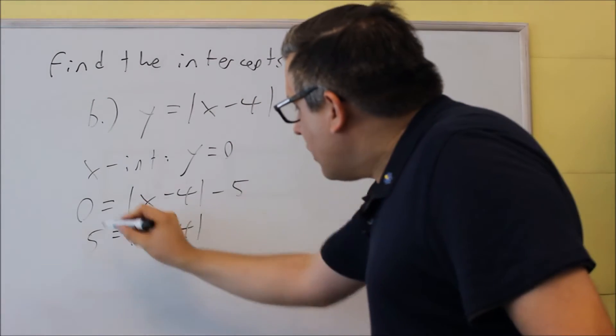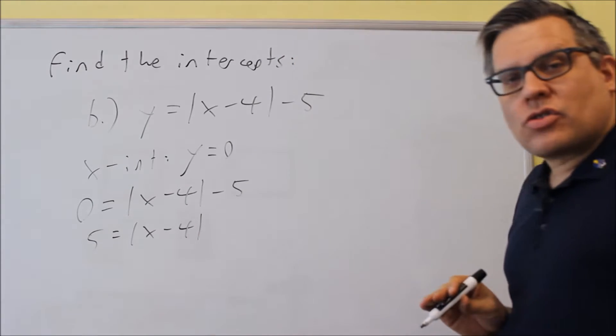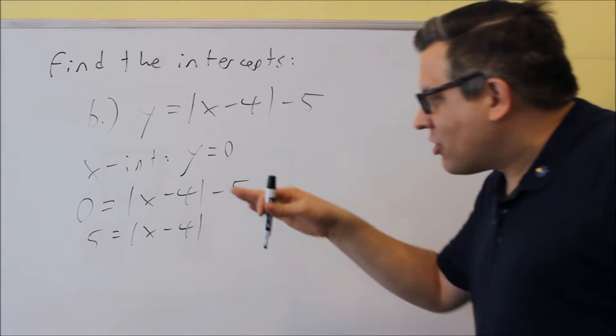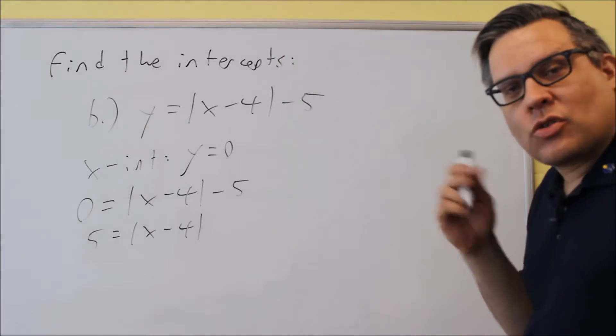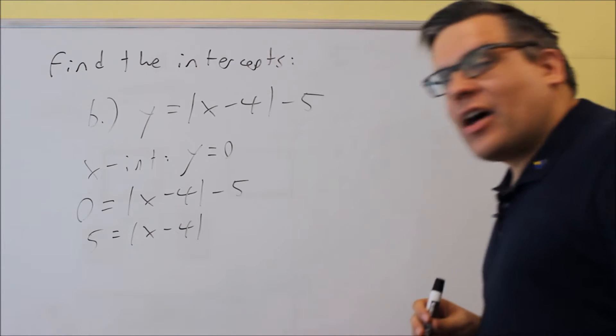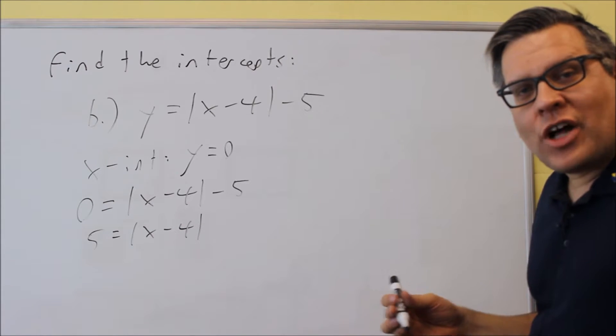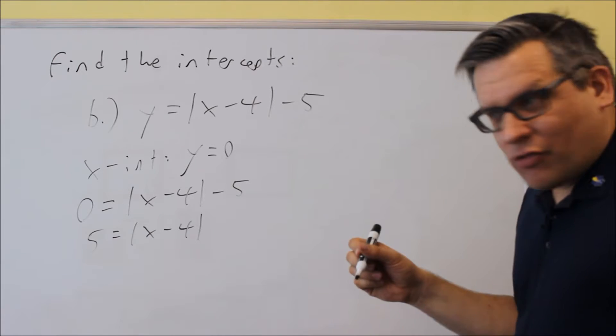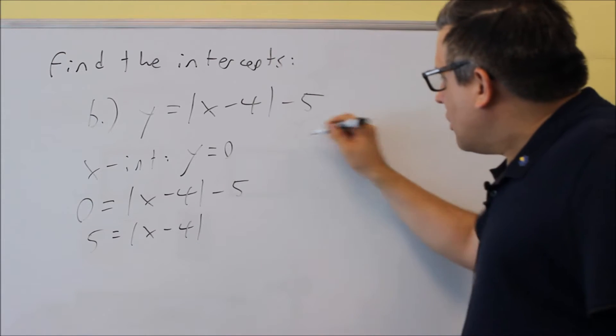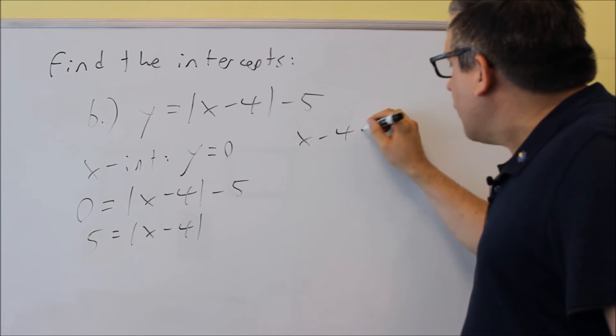Now, you need to, when you have absolute values and you're solving them, remember that this is actually going to go into two different equations. The reason why is because absolute value of 5 is 5, but absolute value of negative 5 is also 5. So we're going to take this and turn it into two different equations.